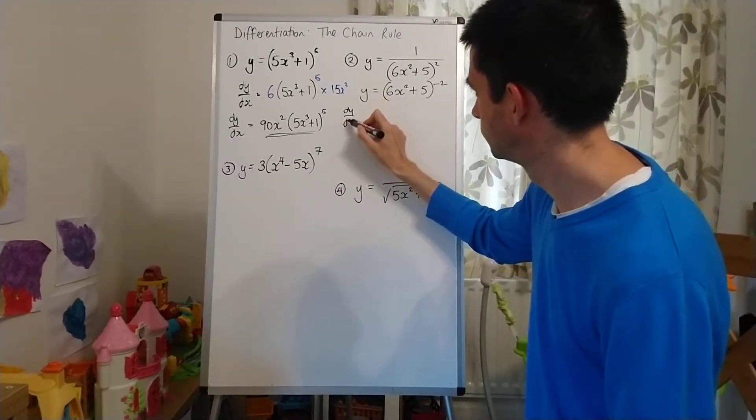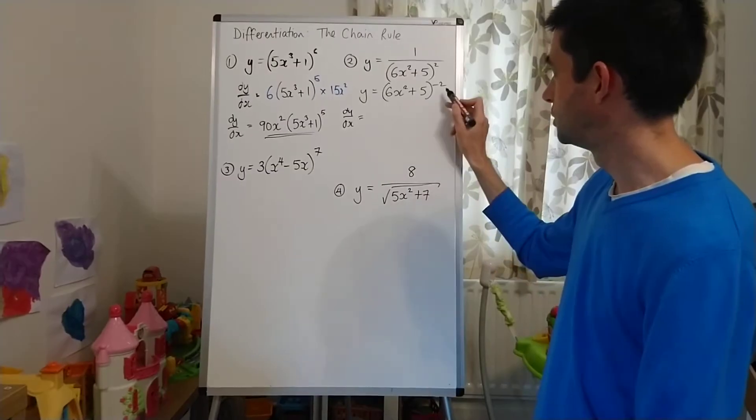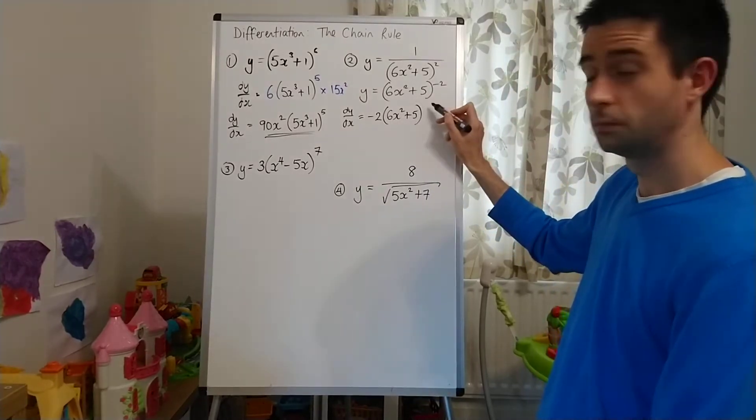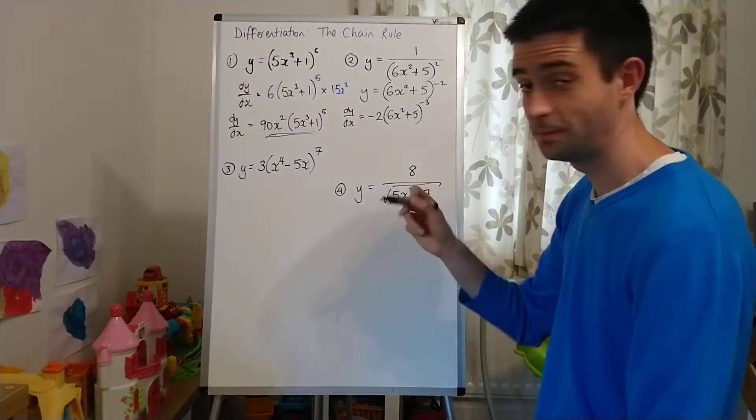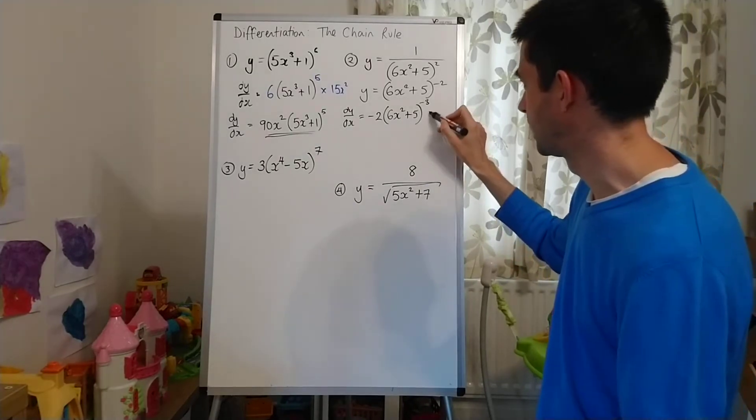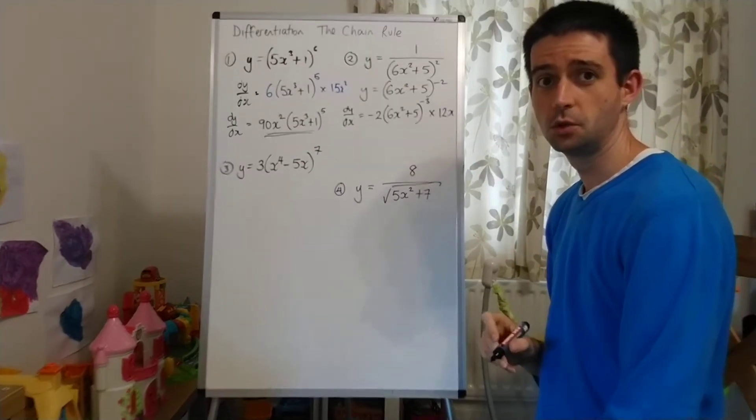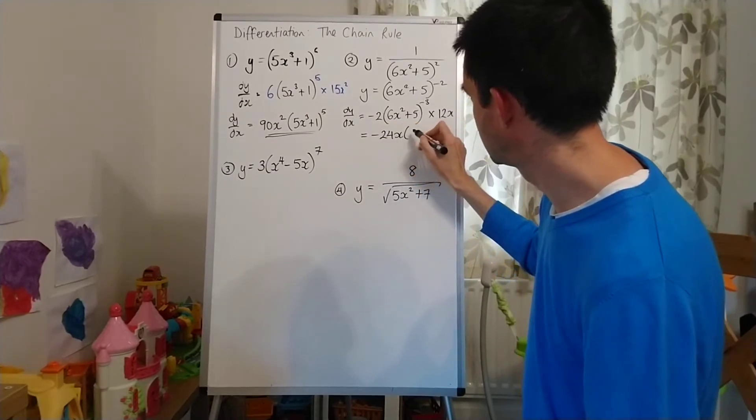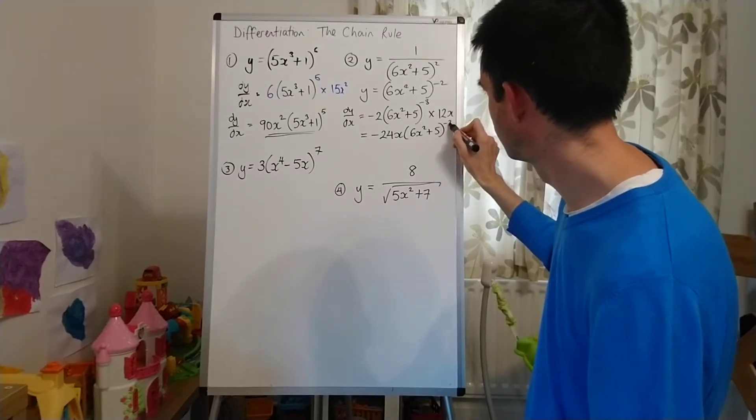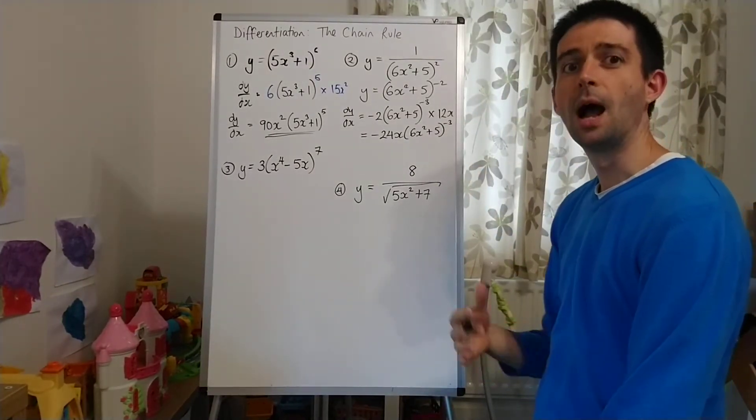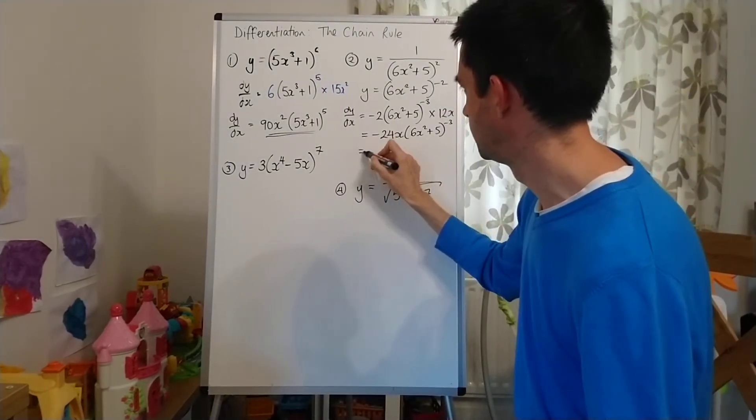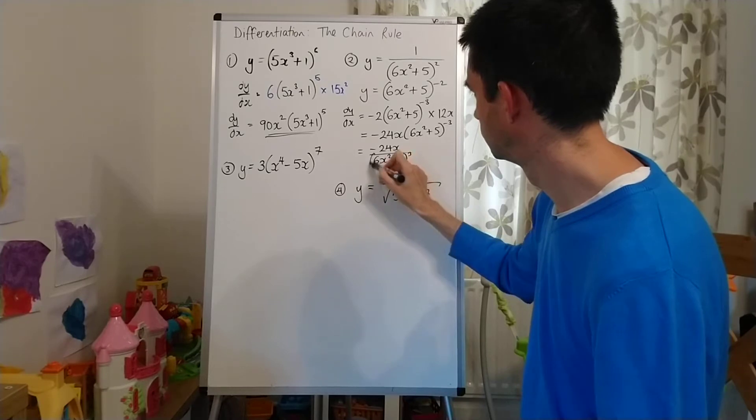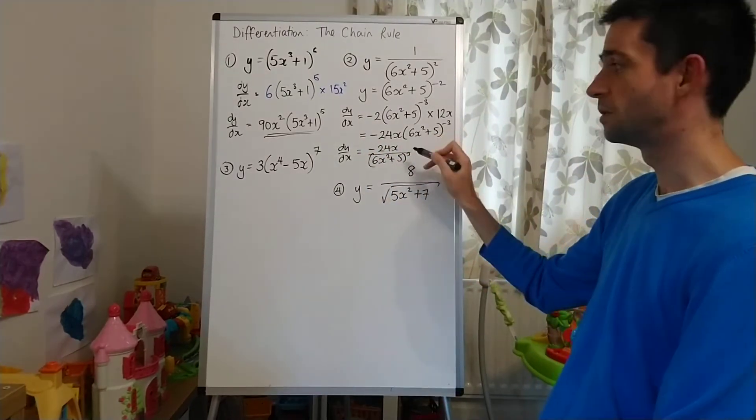And then when I differentiate, the same thing is going to happen as happened over here. So power is coming down. So negative 2 in front, 6x²+5. One of the power. So reduce the power by 1 to negative 3. Be careful with that. Multiply by the differentiated bracket. And 6x² would differentiate to 12x. Negative 2 times by 12. So that can be written as -24x(6x²+5)^(-3). Which if you're being flash, you could put it back into fraction form. And you could say that that's the same as -24x/(6x²+5)³. Either of those two forms is fine.